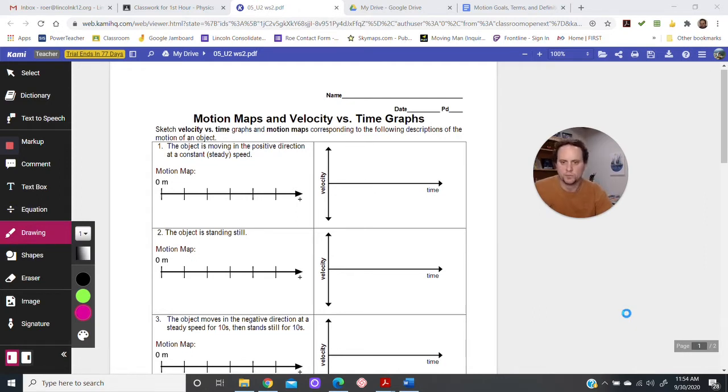So let's jump into it. Number one, this is going to be a description that you've got here of an object and you're going to draw a motion map and the velocity time graph. Remember that the velocity, if it's steady, you're going to get some pretty boring graphs. If it's constant velocity, you're going to get these flat line graphs. I'll show you what that looks like in just a sec. Let's jump right into the first one.